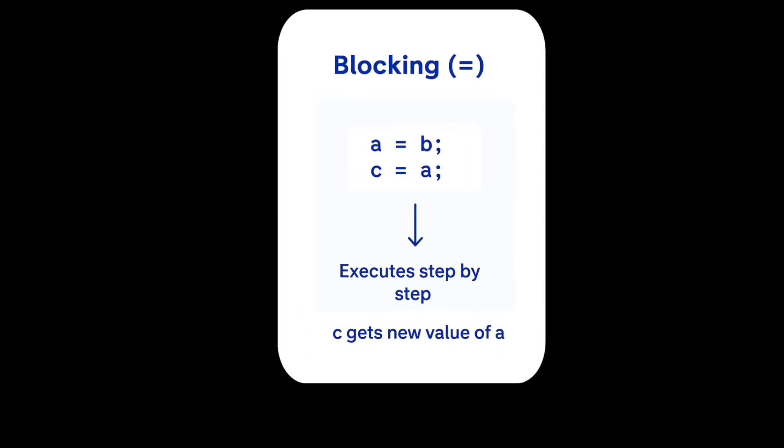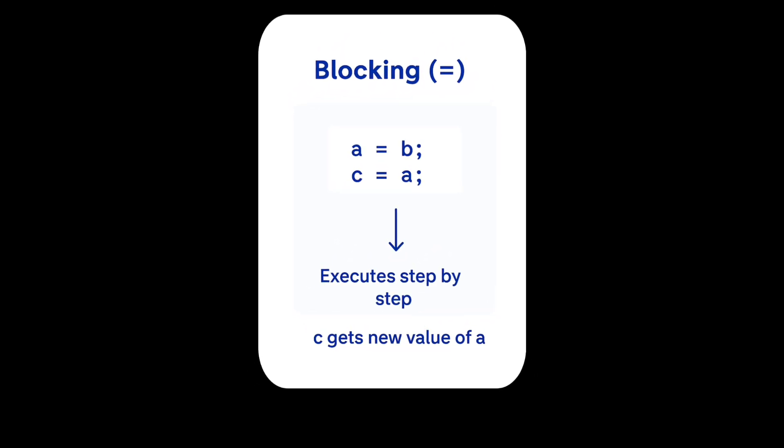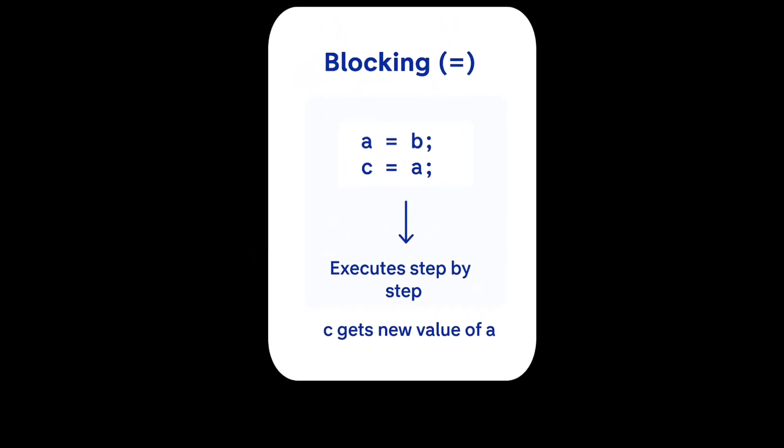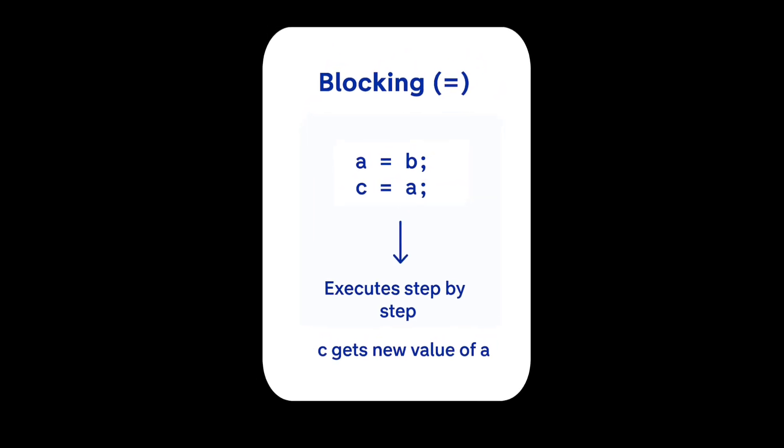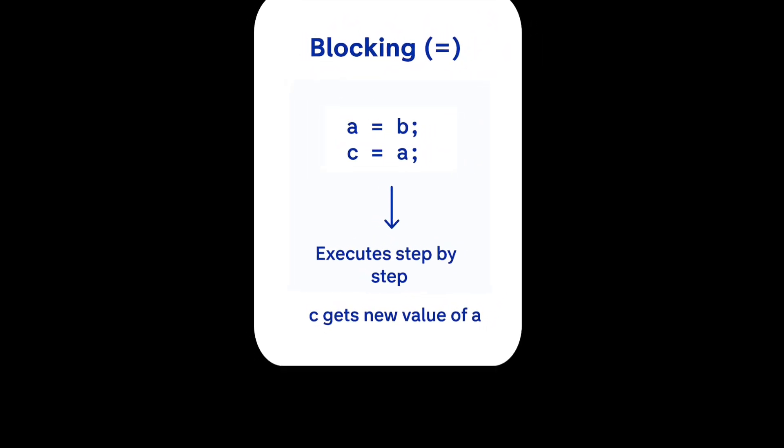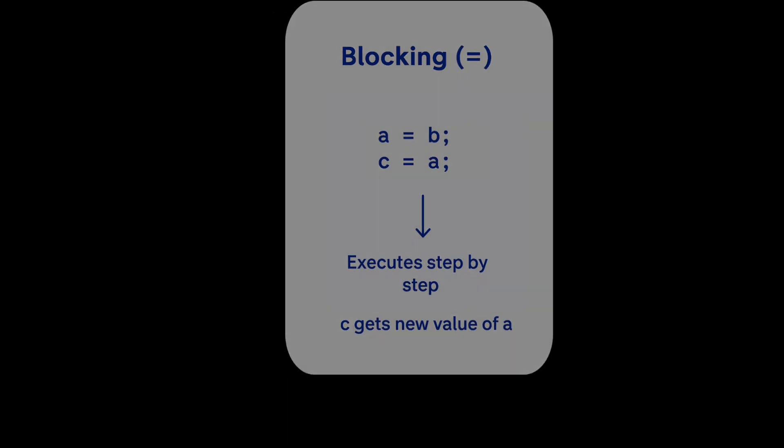For blocking, example is A = B and then C = A. So it will execute step by step. First, A will get the value of B. After that, at another clock edge, C will get the updated value of A, meaning new value of A.